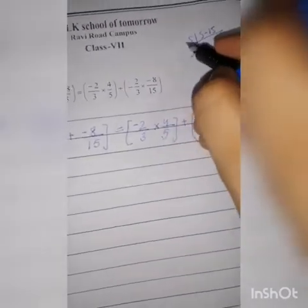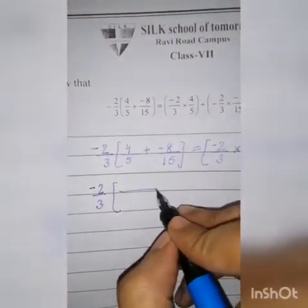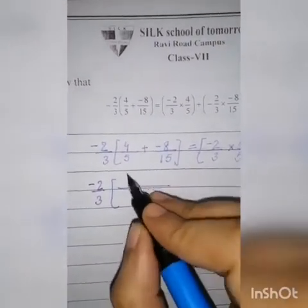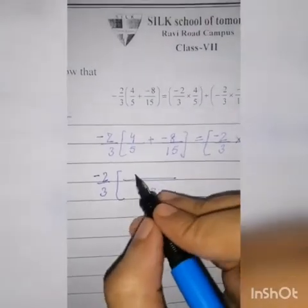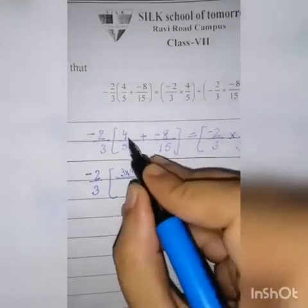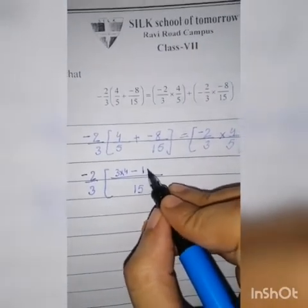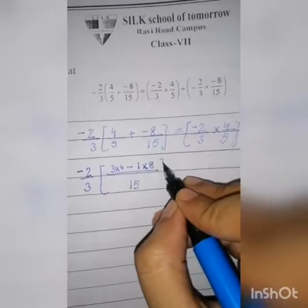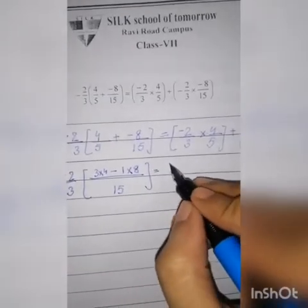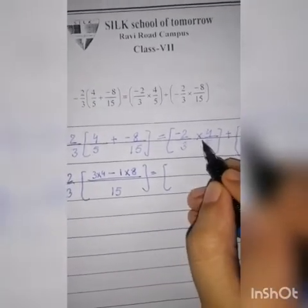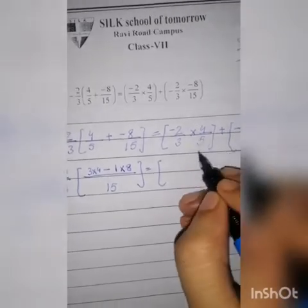Looking at the LCM: multiply to get the common denominator. We have minus 8 over 15 and 1 multiply by 4. Next step: minus 2 over 3 multiply by 4.